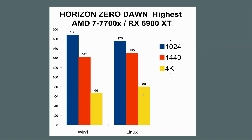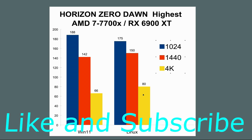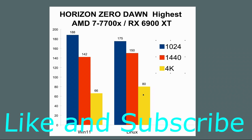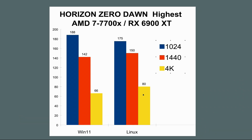Now we have Horizon Zero Dawn at the highest level. It doesn't perform quite as good at 1080p — we're at 188 on Windows and 175 on Linux. At 2K or 1440p, Windows has 142 and Linux has 150. At 4K, Windows has... and Linux improves relatively. What you're going to find is that sometimes 1080p gaming isn't as good in Linux, but then you go to 2K and 4K and you get a better result. I don't know if that's because Linux is just more efficient with CPU usage or so forth, but those are the results I got.